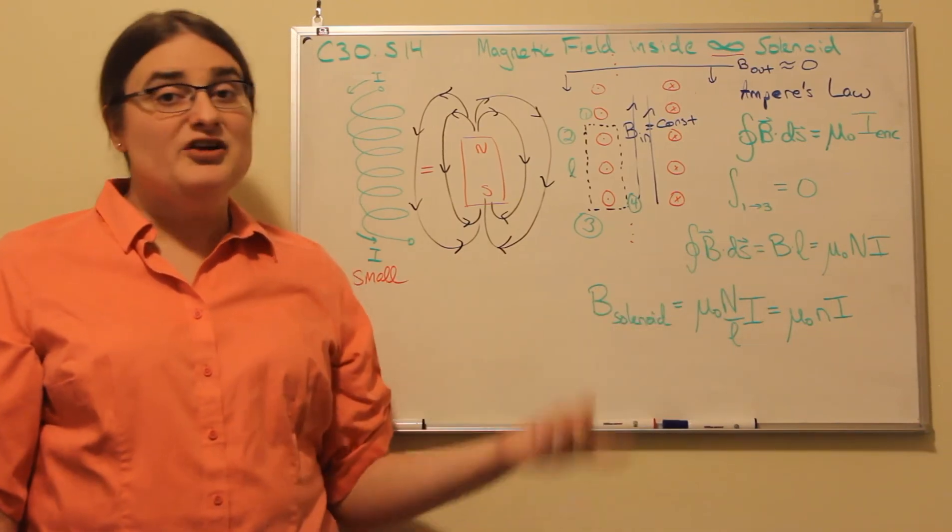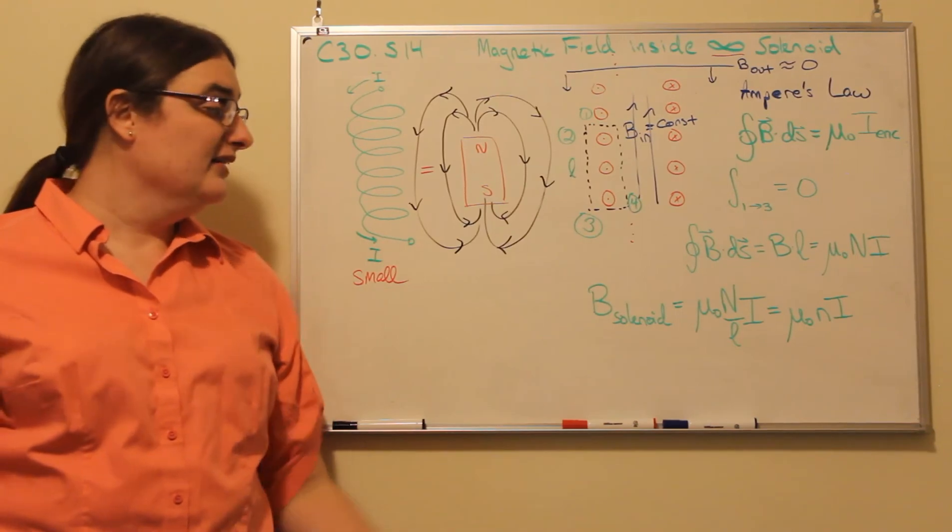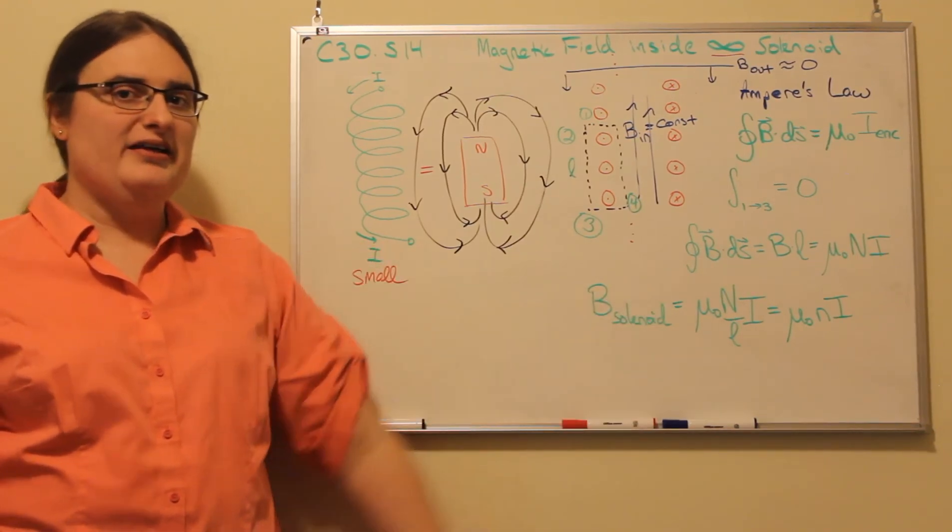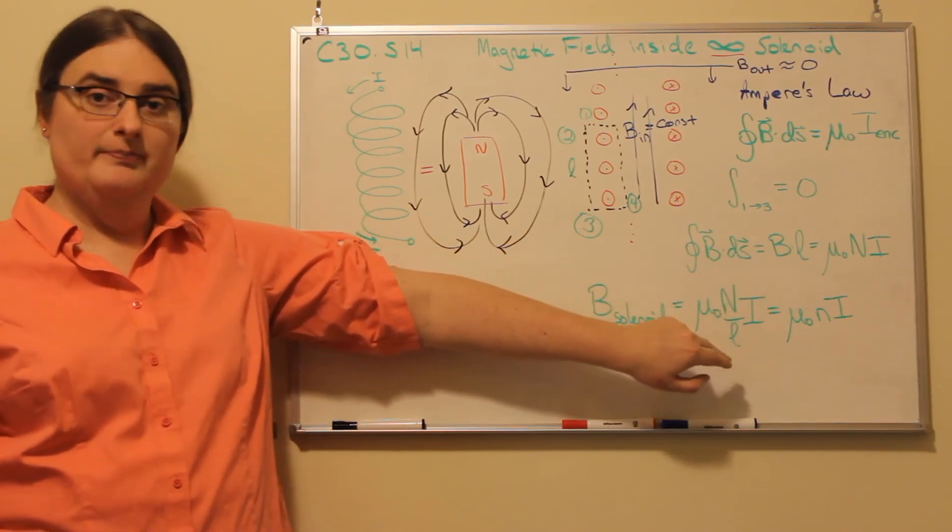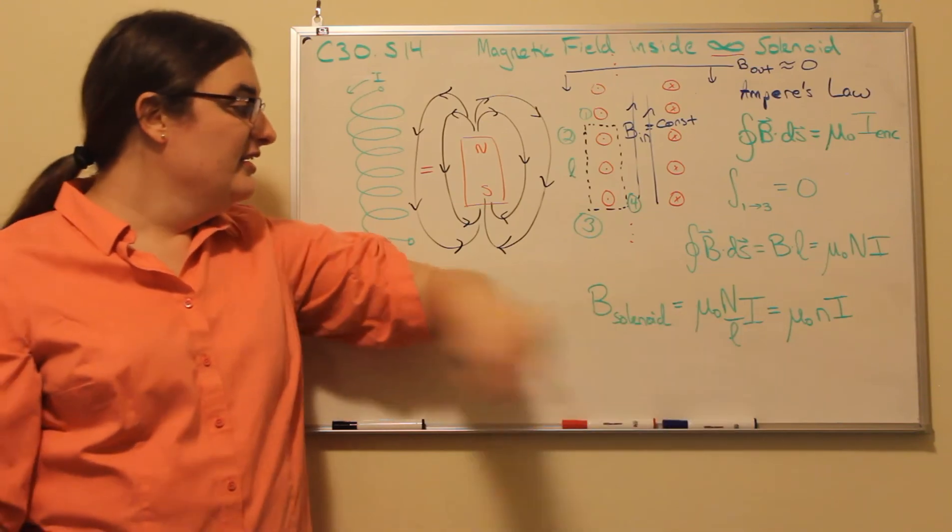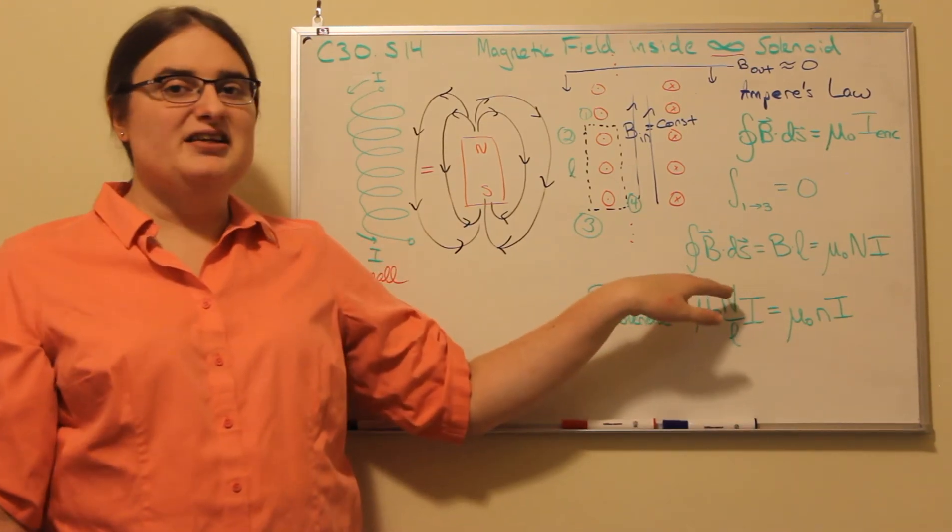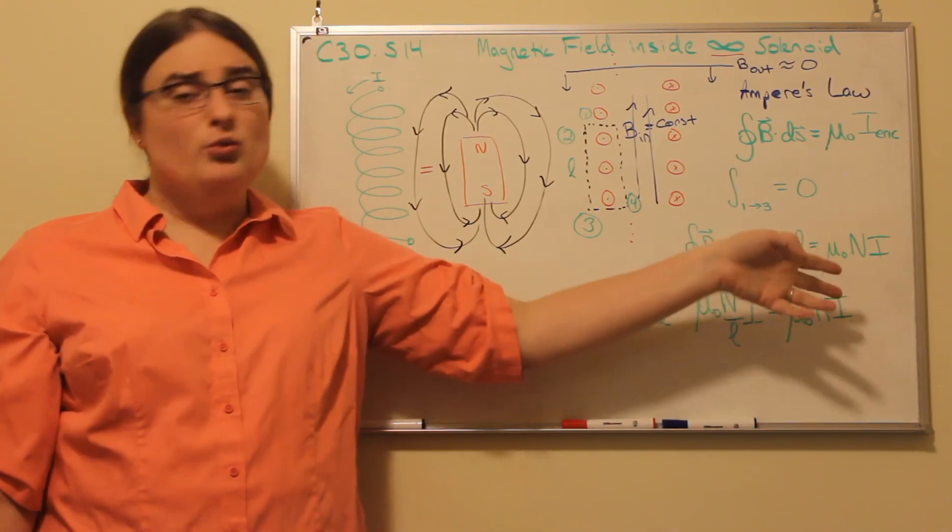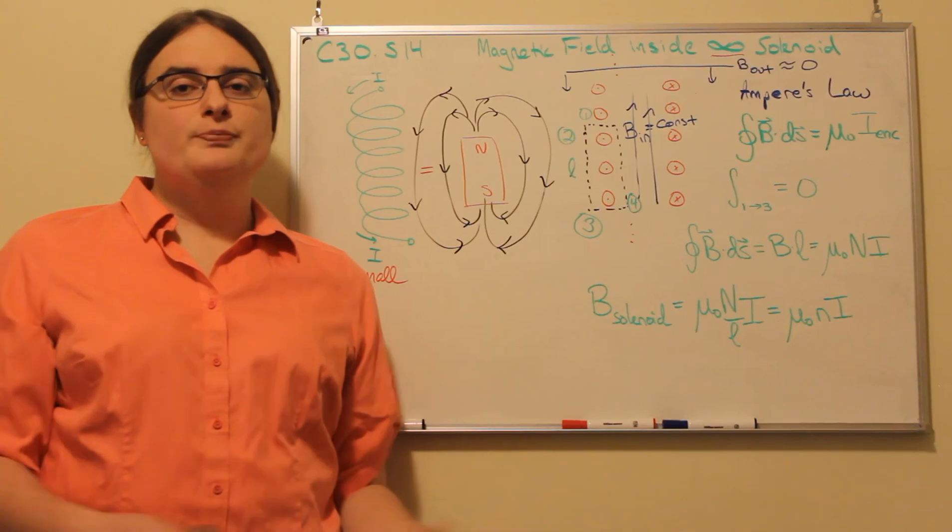To solve for the magnetic field inside the solenoid, I just have to divide by my length. So the magnetic field we get is the permeability of free space times the number of loops per meter, the total number divided by the total length of our solenoid, times the current of the solenoid. And often, we'll represent the number of turns per length with a lowercase n for little n loops per meter.